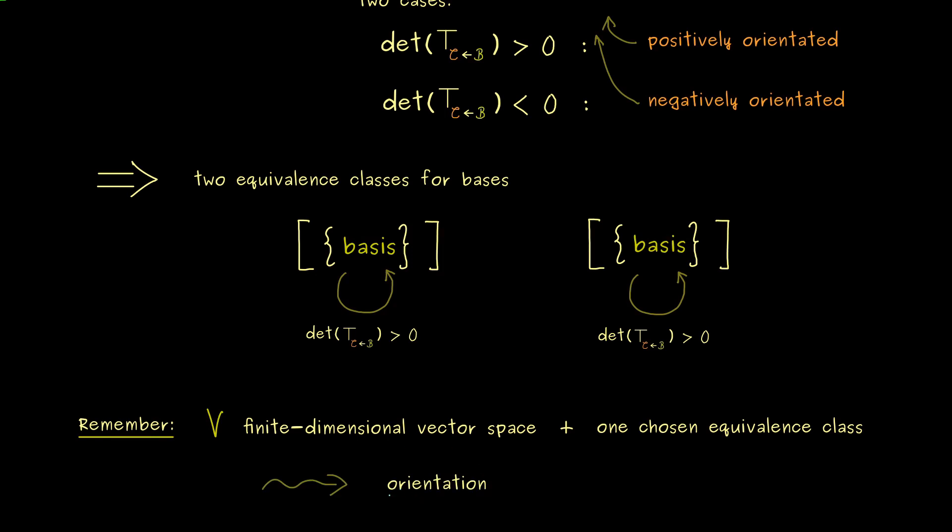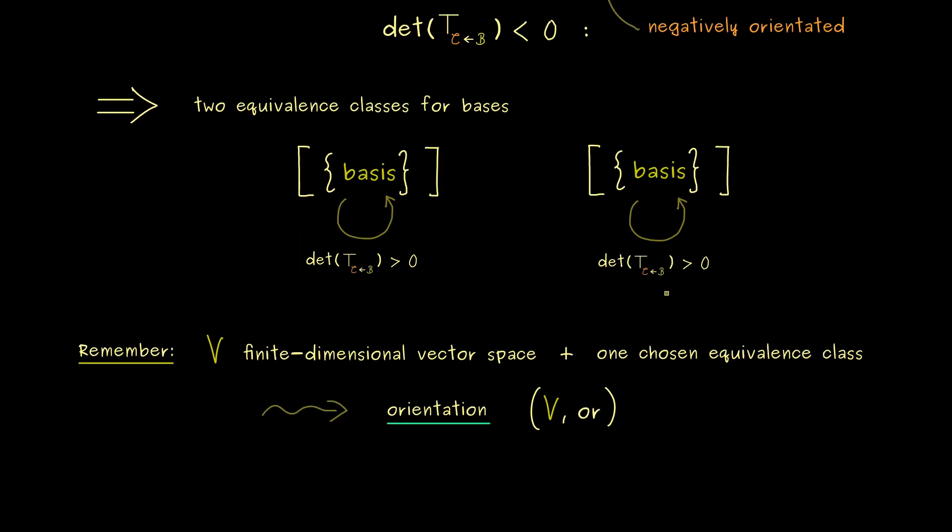Hence you could say we have an orientated ℝⁿ in this case. Indeed, in general, the common notation one can use here is simply the vector space together with Or, the orientation. And usually one would call the chosen orientation positive and the other one negative.